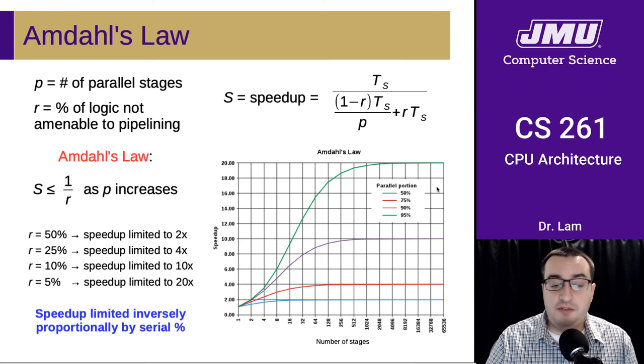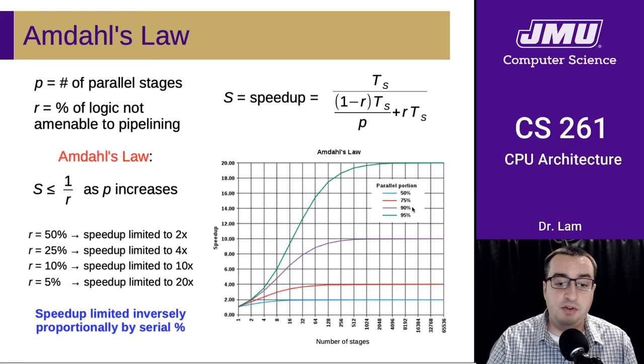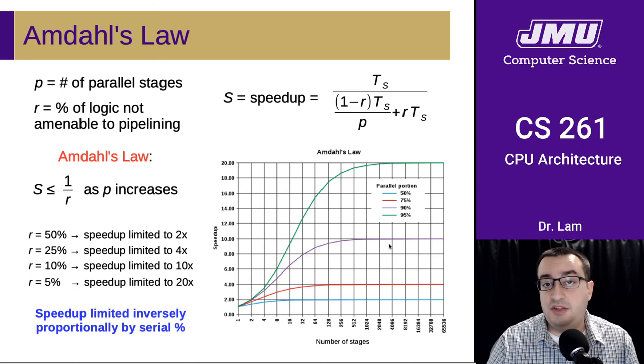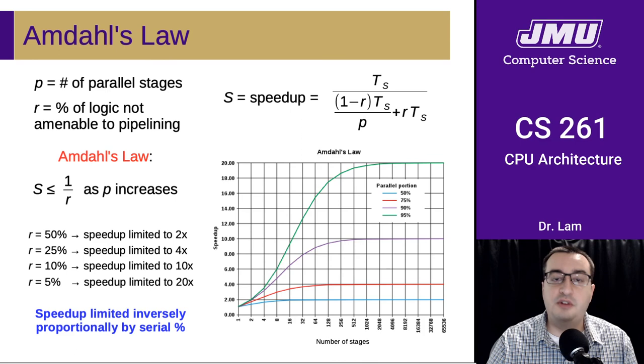If, on the other hand, we can manipulate it, or if we have a problem that is amenable to parallelization such that 90% of it is parallel and only 10% of it is inherently serial, then Amdahl's law tells us that our theoretical limit is going to be 10x, which is much greater, and we'll get a better theoretical speedup from it.